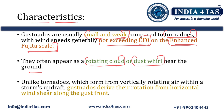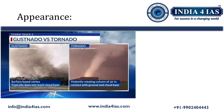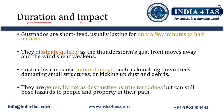One major difference between tornadoes and Gustanados is that tornadoes form from vertically rotating air within a storm's updraft, whereas Gustanados form from the rotation of horizontal wind shear along the gust front. This visual difference between the Gustanado and tornado can be seen in the image on the following slide.